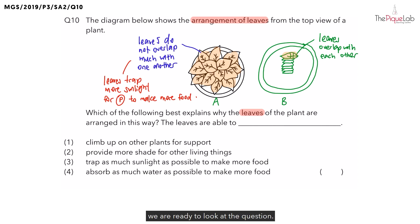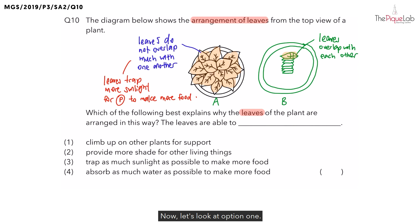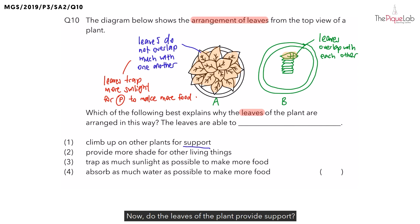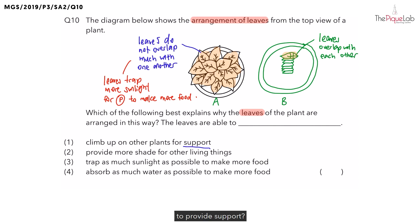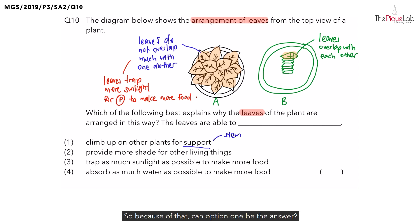So with that understanding, we are ready to look at the question. Let's look at option one. Option one says that the leaves are able to climb up on other plants for support. Do the leaves of the plant provide support? No. Instead, it is the stem which helps to provide support. So option one cannot be the answer, let's cross it out.